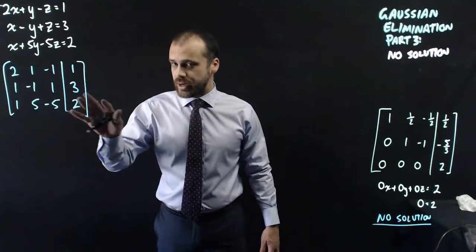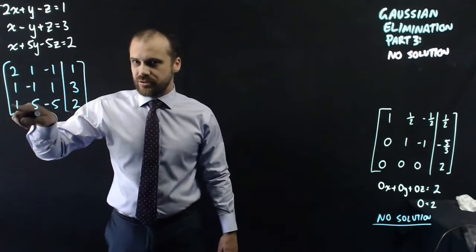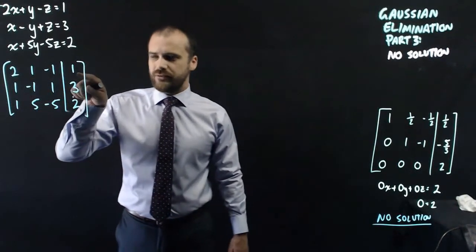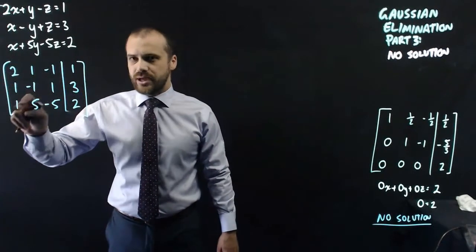So I've put all that information into an augmented matrix. Now, the first step is to make this a zero, and this a zero. But actually, I'm going to do something first. I'm going to multiply this one by a half, because then that'll be a one, and I'll be able to use that one to subtract from there and there.